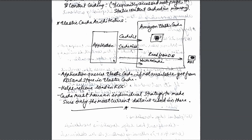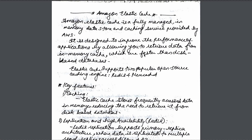That was all about ElastiCache. To recap: the application tries to retrieve data, and before hitting RDS, it checks ElastiCache. If the data is present, it provides it directly; if not, it gets the data from RDS and makes it available to the user.